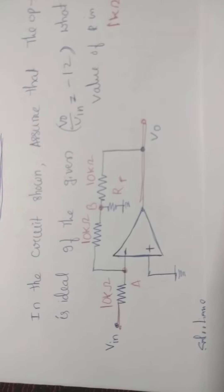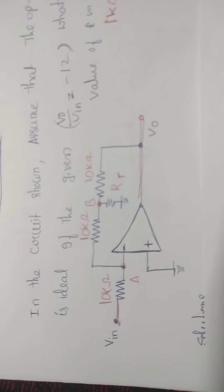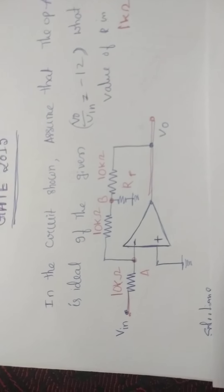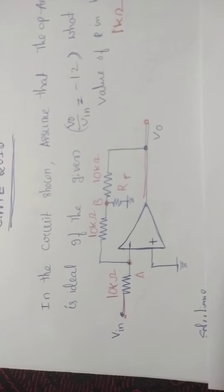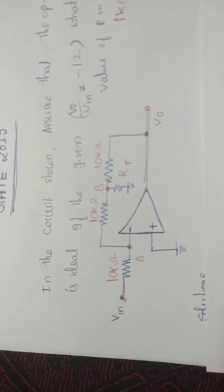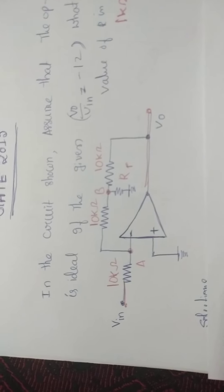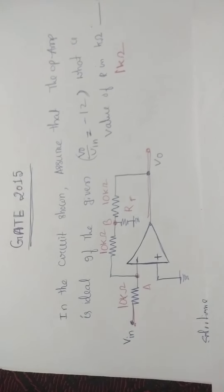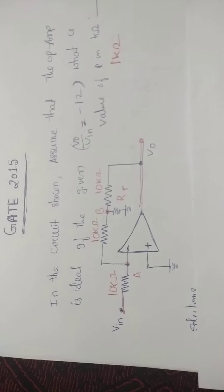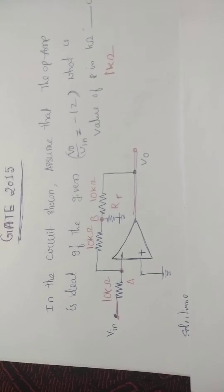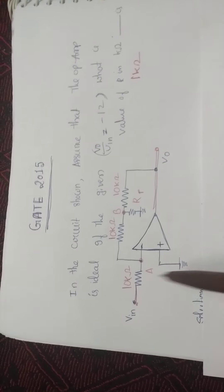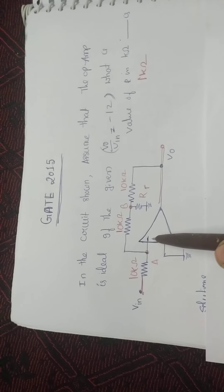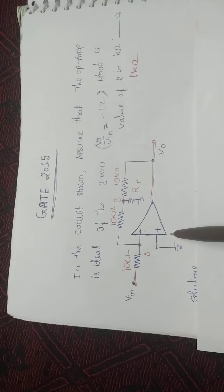The ideal operational amplifier has different characteristics. As we know from previous videos, for an ideal operational amplifier, the voltage gain is infinity. Because of the virtual ground concept, the voltage at the non-inverting terminal is equal to the voltage at the inverting terminal. It is a differential amplifier — the output voltage is the difference between the two input voltages at the inverting and non-inverting terminals.